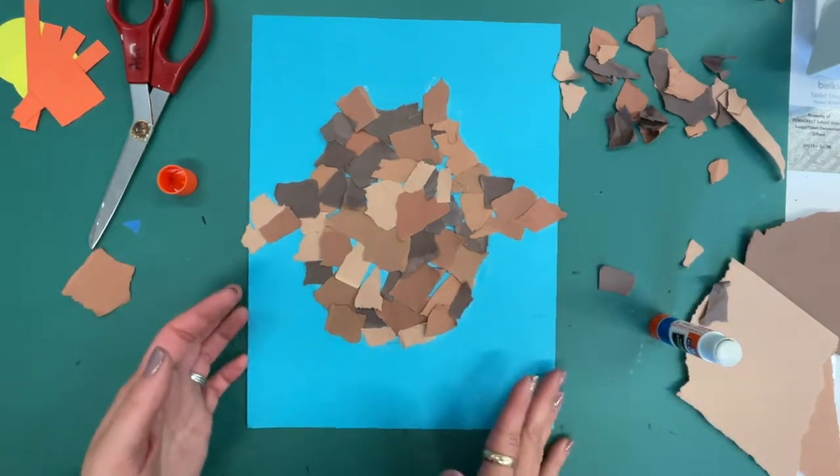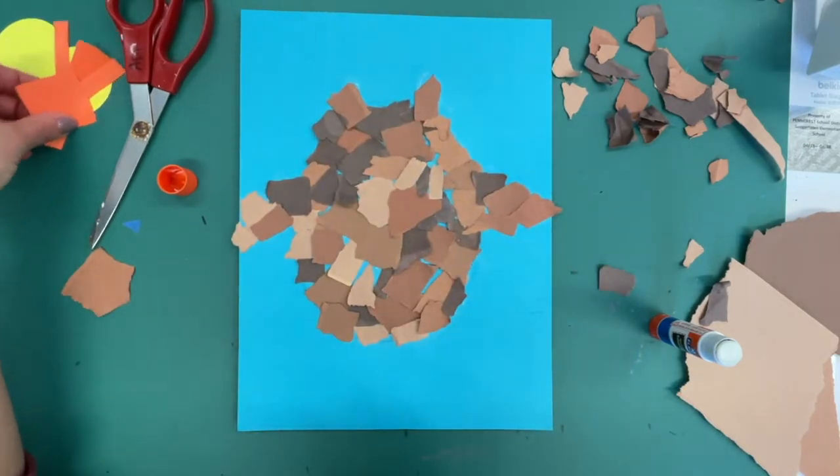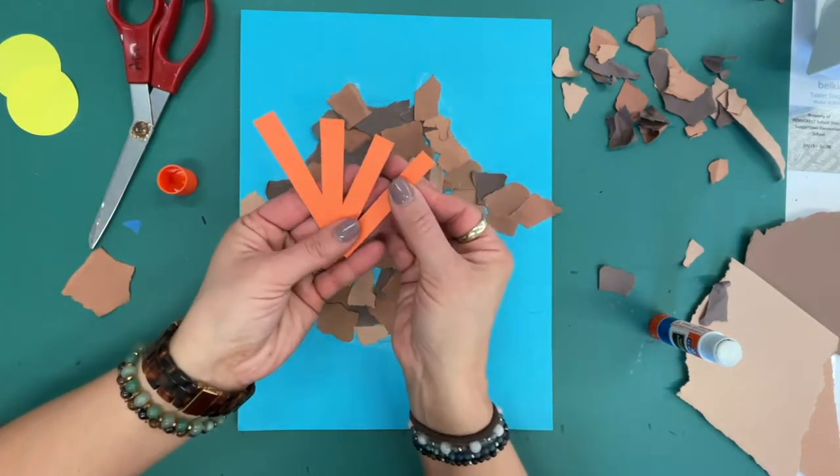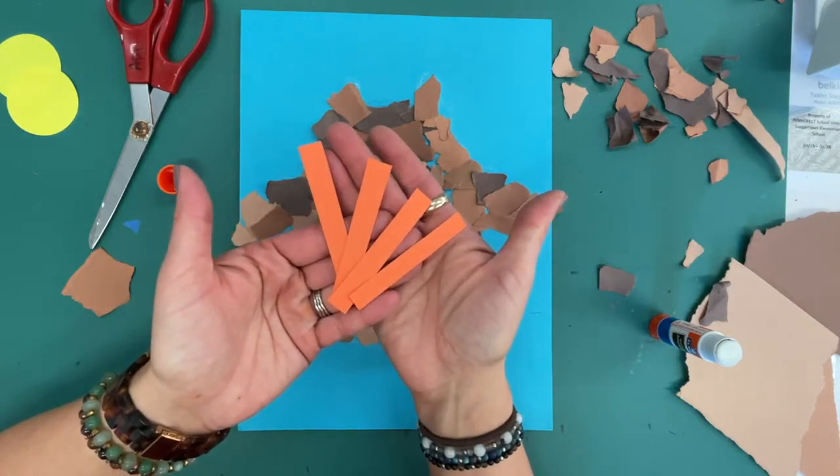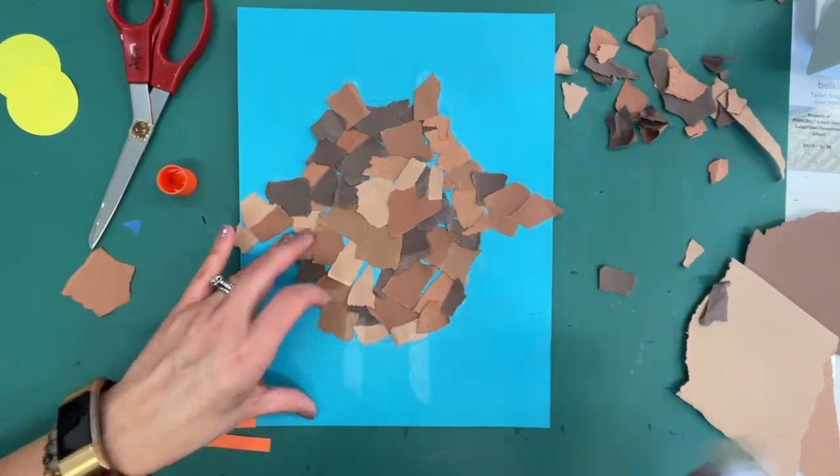All right, so I have my owl body with his wings and his little horned ears there. Now let's turn this brown torn paper into an owl. So the first thing I'm going to do is I'm going to give him some legs. I said we needed four pieces right, four long skinny rectangles. First thing I'm going to do is do two lines down.